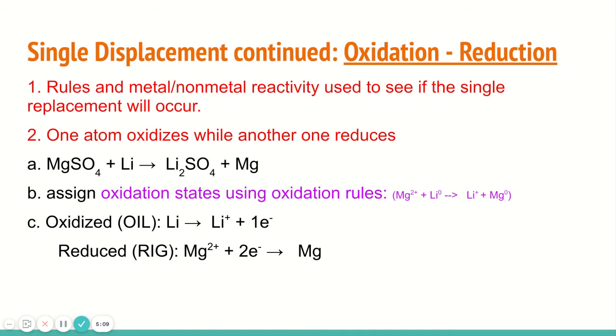Most single replacement reactions are actually oxidation reduction reactions. We learned how to assign oxidation state last semester. Using the oxidation rules, you would assign oxidation states to everything in A. So the magnesium sulfate and the lithium sulfate and the individual magnesium. If you do that, you'll see a change. You'll see magnesium as the reactant has a positive two oxidation state and as a product has an oxidation state of zero. And you'll see lithium as a reactant has an oxidation state of zero and then as a product has an oxidation state of one.